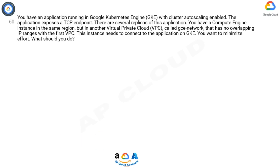You have an application running in Google Kubernetes Engine (GKE) with cluster autoscaling enabled. The application exposes a TCP endpoint and has several replicas. You have a Compute Engine instance in the same region but in another VPC called gce-network, which has no overlapping IP ranges with the first VPC. This instance needs to connect to the application on GKE. You want to minimize effort. What should you do?